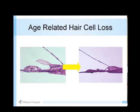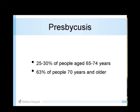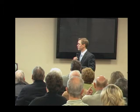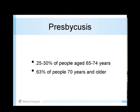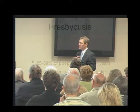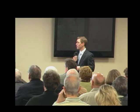Presbycusis just means you can't hear as well because you're getting old. "Presby" means old and "cusis" means hearing — the Presbyterian church is governed by the elders. If you look at people 65 to 75 years old, about a quarter to a third of them have some form of hearing loss. A recent study found that 63% of people older than 70 have mild to moderate hearing loss or worse — almost two-thirds of people over 70.